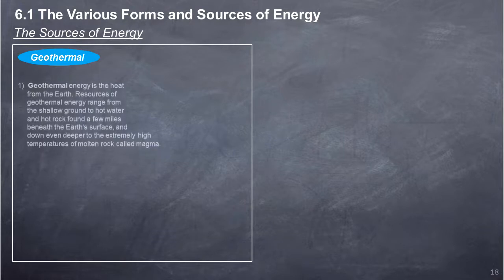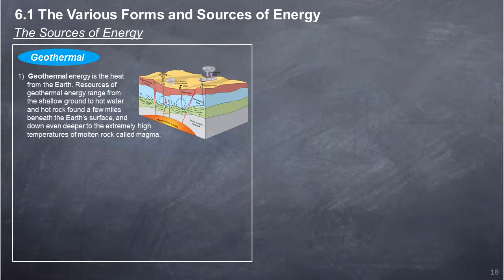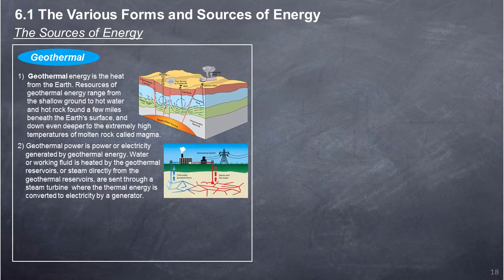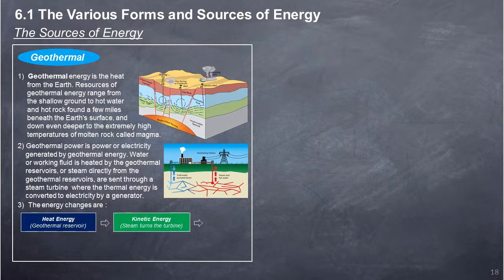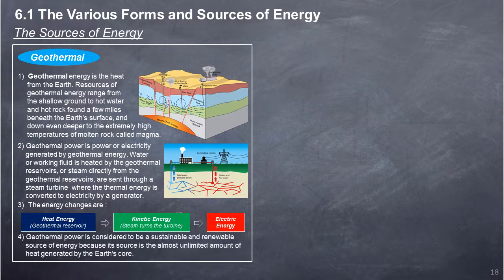Geothermal Energy: Geothermal energy is the heat from the earth. Resources range from shallow ground to hot water and hot rock found a few miles beneath the earth's surface, and down even deeper to extremely high temperatures of molten rock called magma. Geothermal power is electricity generated by geothermal energy. Water or working fluid is heated by geothermal reservoirs, or steam directly from the reservoirs is sent through a steam turbine, where thermal energy is converted to electricity by a generator. The energy change is: heat energy of geothermal reservoir → kinetic energy of steam turning the turbine → electric energy. Geothermal power is considered a sustainable and renewable source of energy because its source is the almost unlimited amount of heat generated by the earth's core.